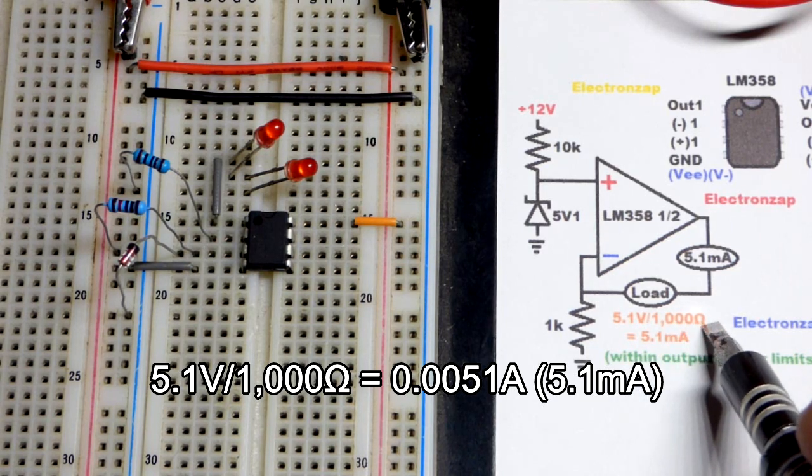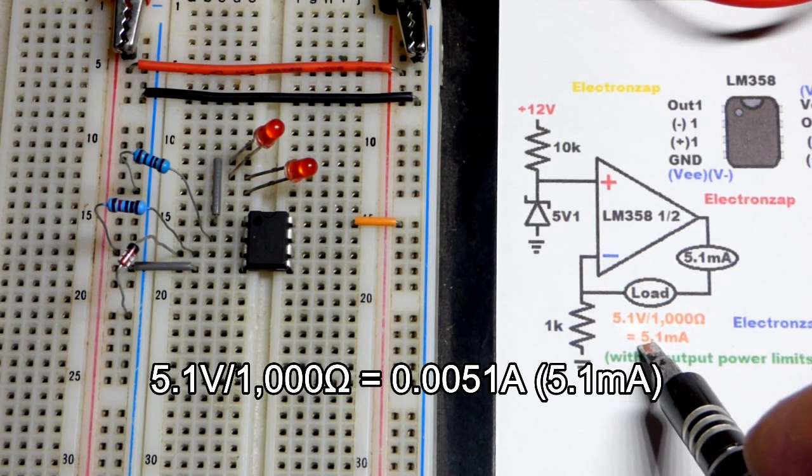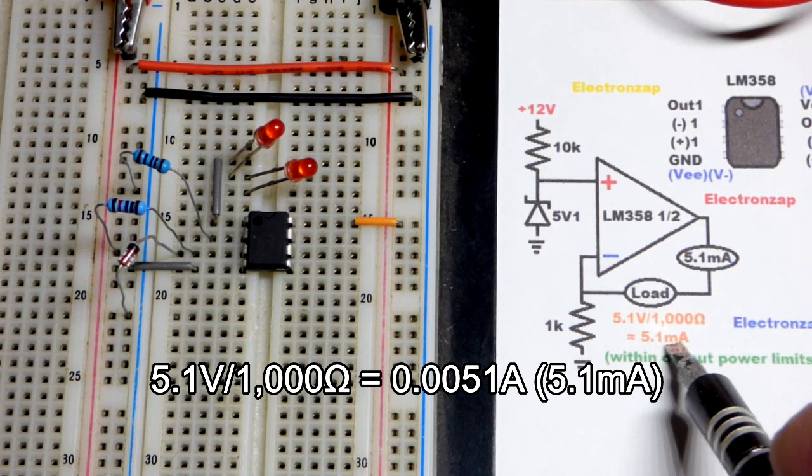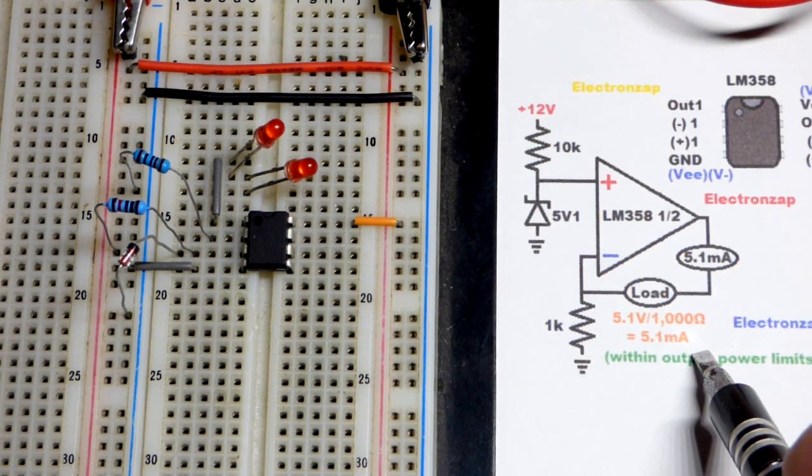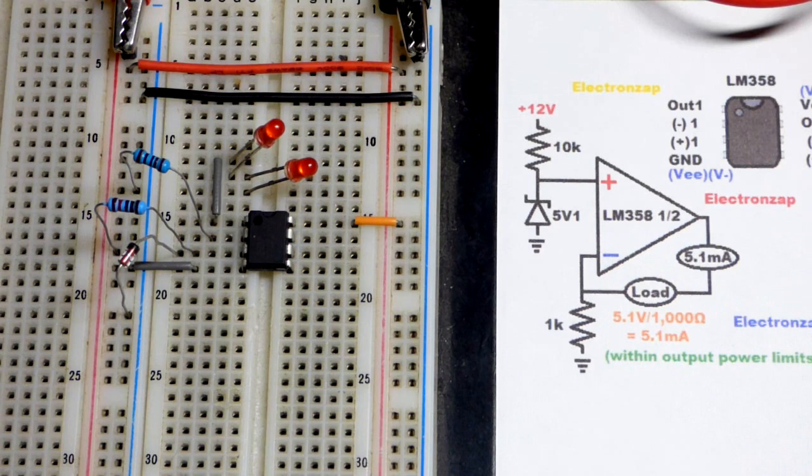And so 5.1 volts divided by a thousand ohms is 0.0051 amps which is the same as 5.1 milliamps, which is pretty close to what we measured.